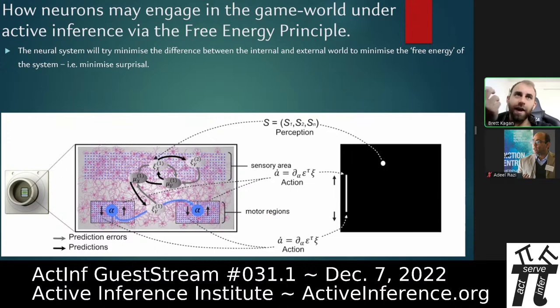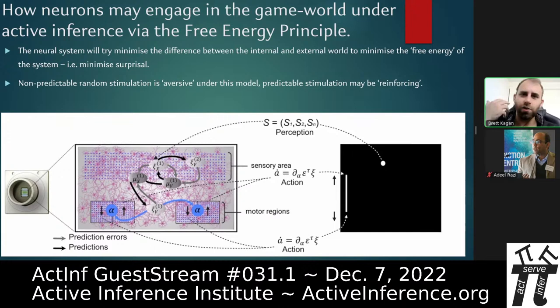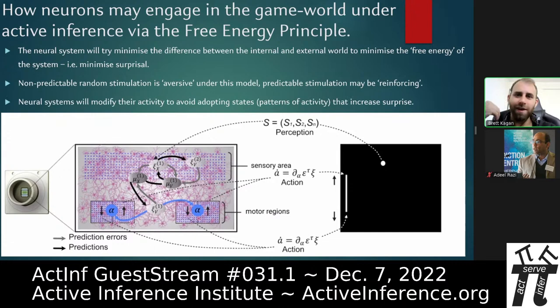We predicted that non-predictable, random stimulation would be something the cells would try to avoid, while predictable stimulation when they did something right would be reinforcing — using those words in quotes, acknowledging the language questions around them. The cells should modify their activity to avoid patterns that would lead to increased surprise.